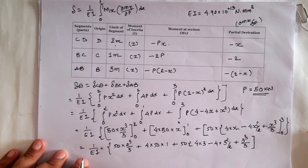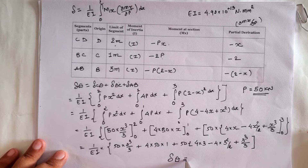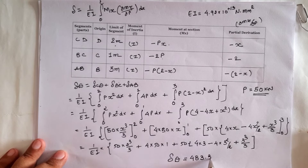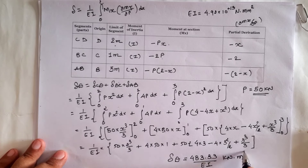Closing the limits, we have delta D equal to 483.33 by EI in terms of kilonewton meter cubed.